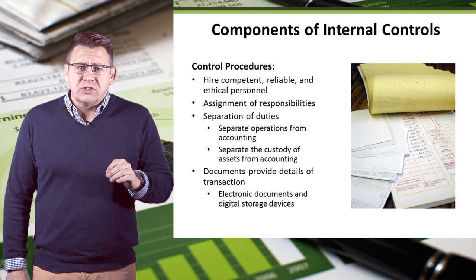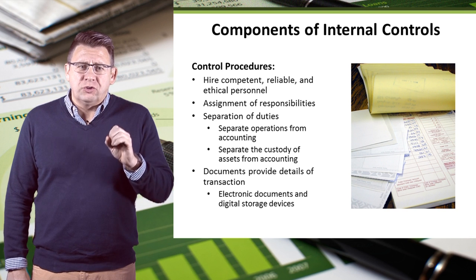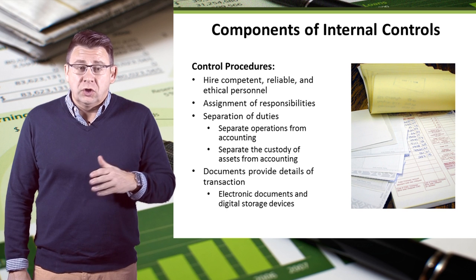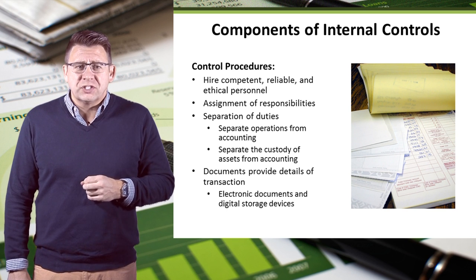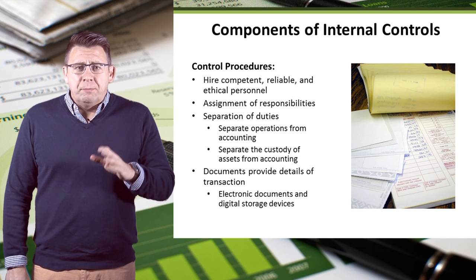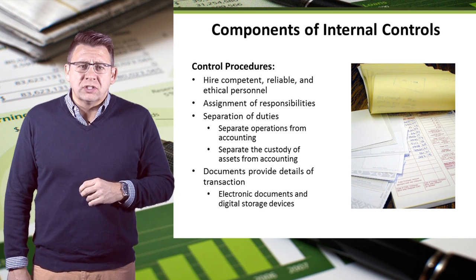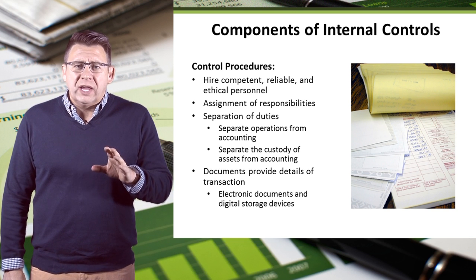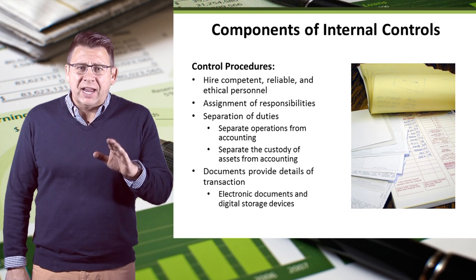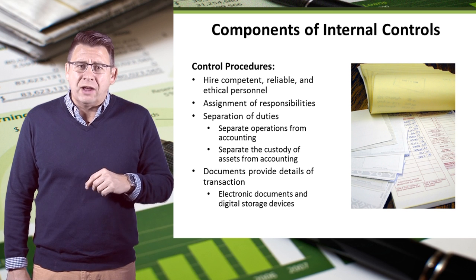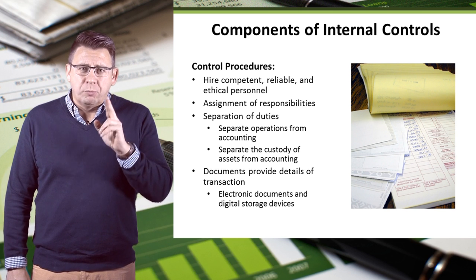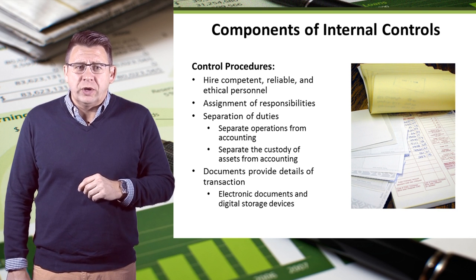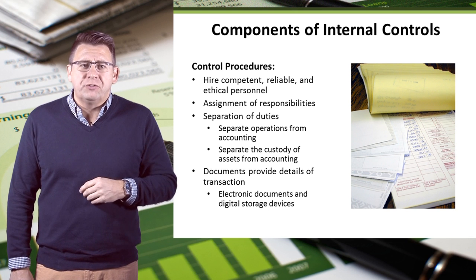Control procedures are the procedures designed to ensure that the business's goals are achieved. Some procedures include hiring competent, reliable, and ethical personnel. In a business with good internal controls, no important duty is overlooked — each employee has certain responsibilities. Clearly assigned responsibilities create job accountability, ensuring that important tasks get done. When management divides responsibilities between two or more people, this is known as separation of duties.